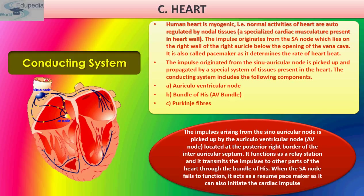The impulse originates from the sinoatrial node and spreads along both auricles, resulting in auricular systole, and is then picked up by the atrioventricular node and transmitted through the bundle of His and Purkinje fibers along the wall of the ventricles, resulting in ventricular systole. The wave of contraction spreads over the ventricles at the rate of 5 meters per second.